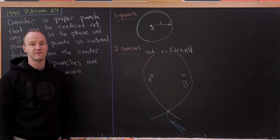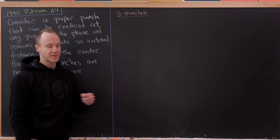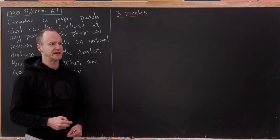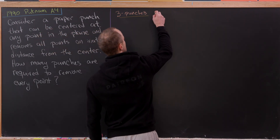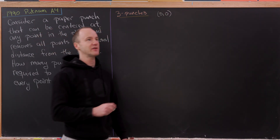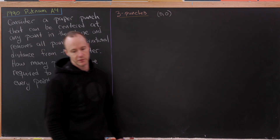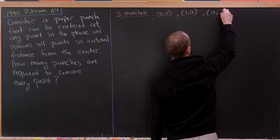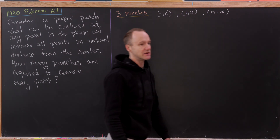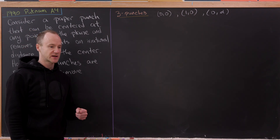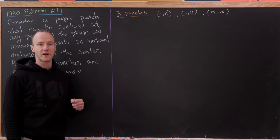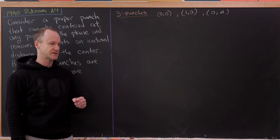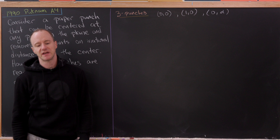Are three punches enough? Yes, and the trick is proving it. I claim three punches will work. We can center them at two nice places and then construct the third point. Let's punch at the origin, at (1, 0) on the x-axis, and at (0, α) on the y-axis. We'd like to construct an α so that it's impossible for any point to be a rational distance from each of these three centers. We'll work towards a contradiction to motivate some condition on α.